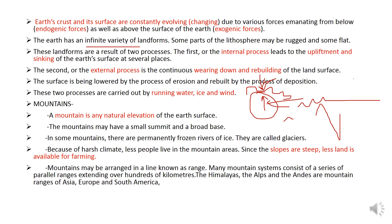The second, or external process, is the continuous wearing down and rebuilding of the earth's surface — that is, the formation and deformation of the land surface. The surface is lowered by the process of erosion and rebuilt by the process of deposition. These two processes are carried out by running water, ice, and wind.